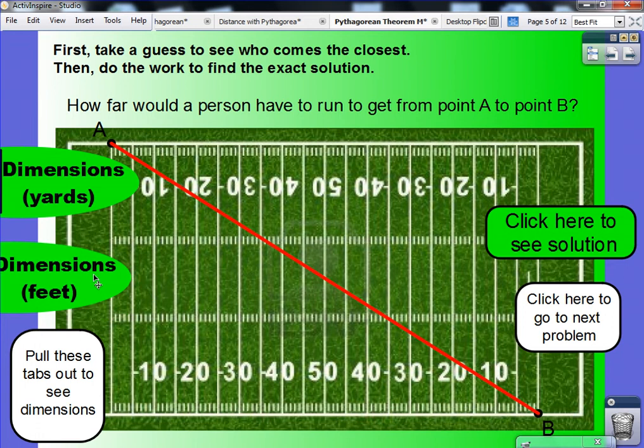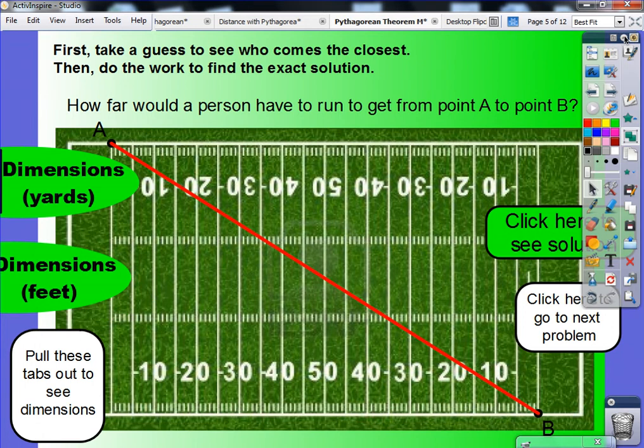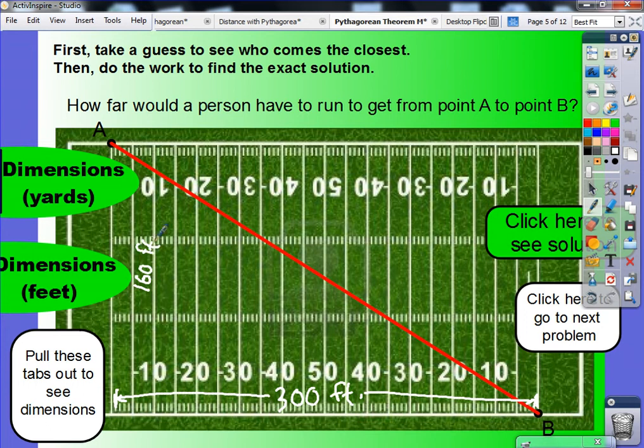So, let's actually label my football field here. I know that I have 300 feet from goal line to goal line. And I know that it is 160 feet in terms of the width of my football field. And a football field is a rectangle. So, you have a right angle right down there.